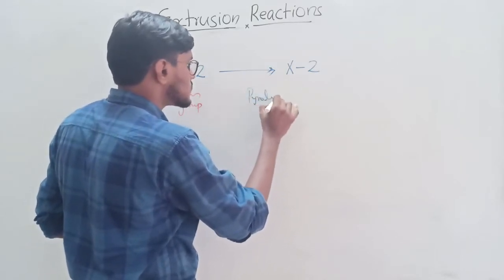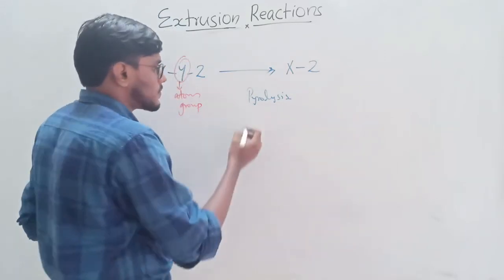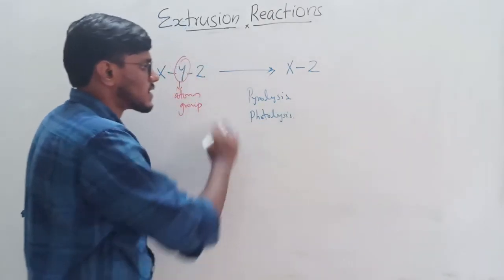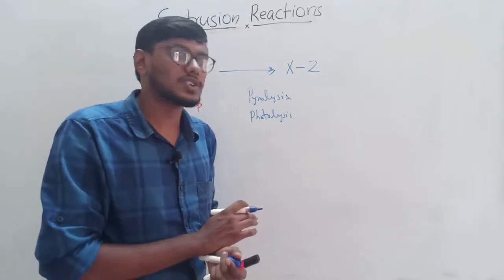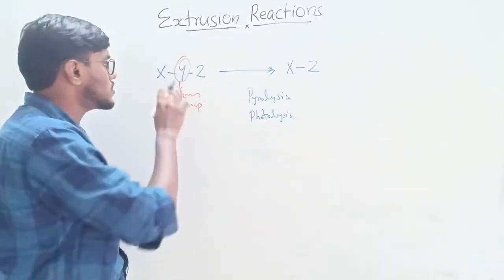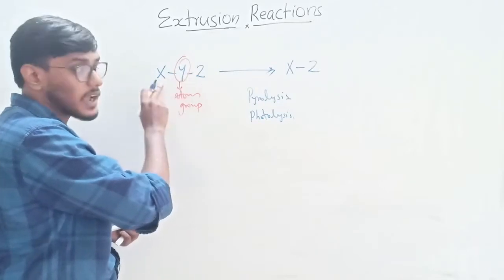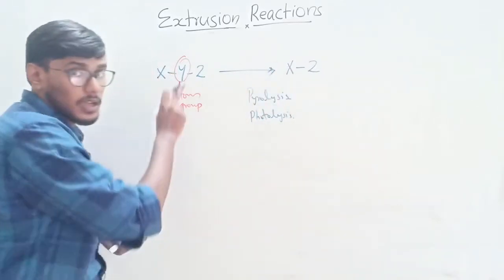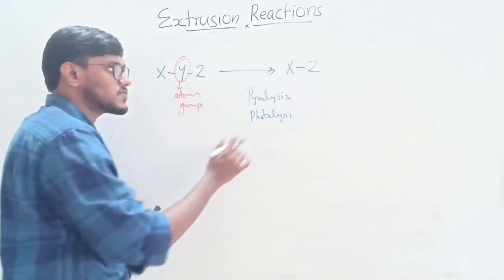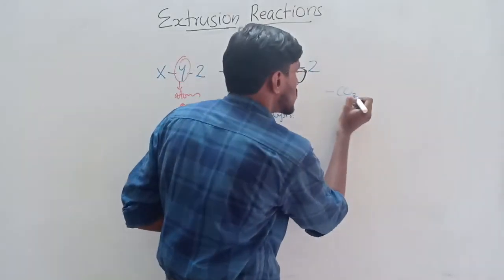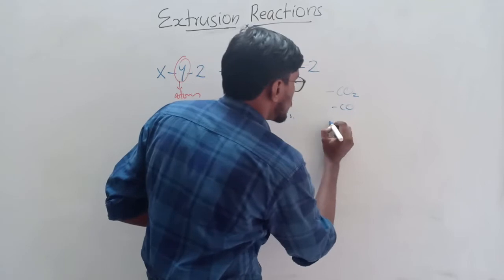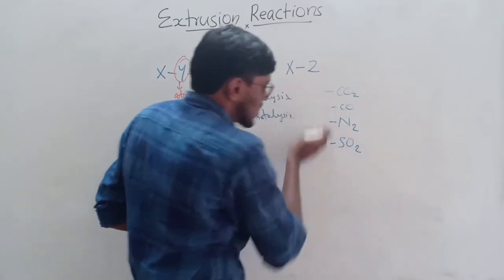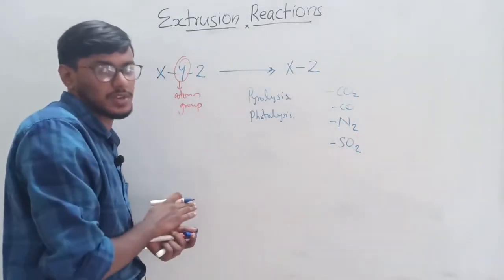These reactions may take place by the action of heat, called pyrolysis, or by the action of light, called photolysis. Some catalyst may be needed in some reactions. In these reactions, an atom or group attached to two other atoms is eliminated. The common groups which undergo extrusion reactions are CO2, CO (carbon monoxide), N2 (nitrogen), and SO2.